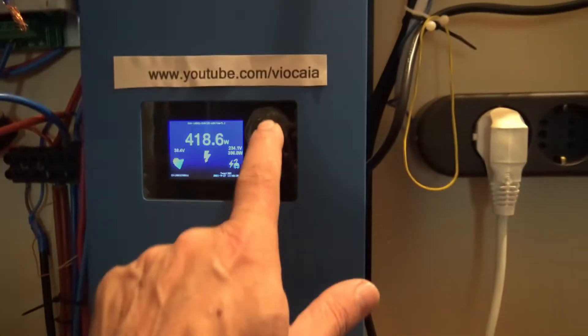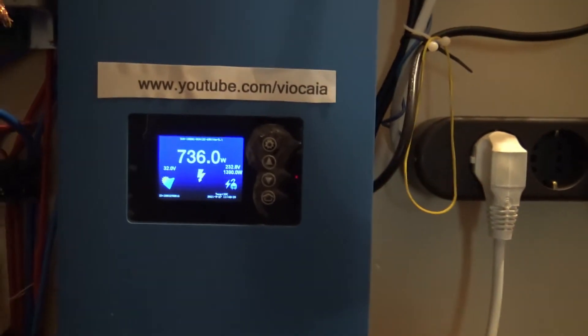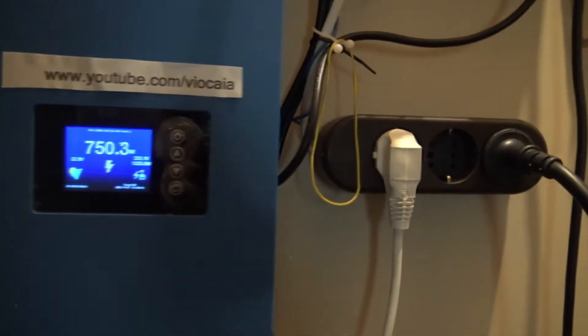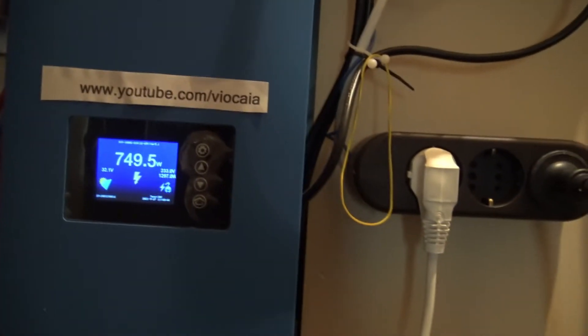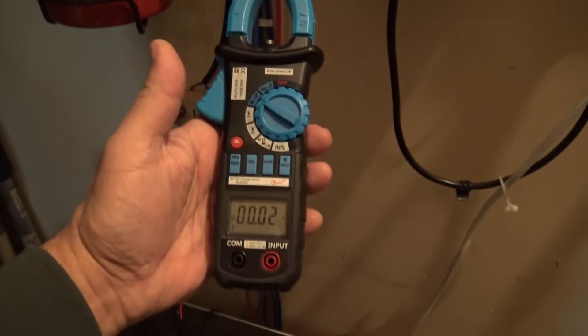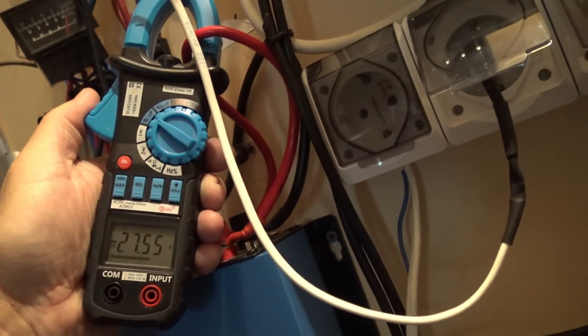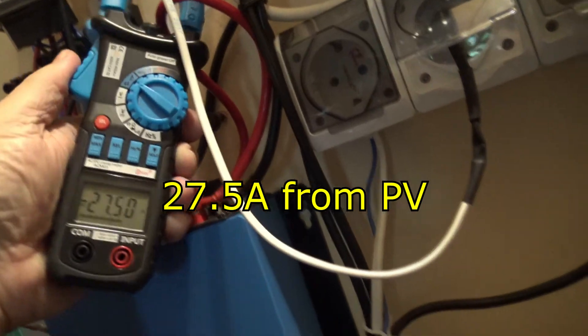So here we go. We have 1363 and 700 watts from the panels going into the system. And let's check for the amps. I have my clamp meter here on DC, and let's see what we got there. 27.5 amps, great.